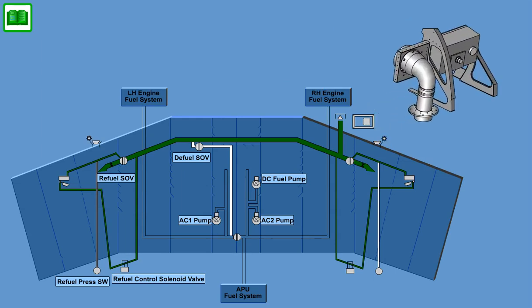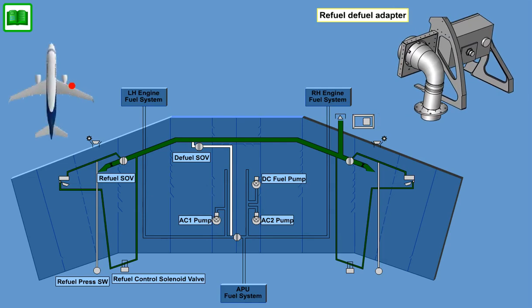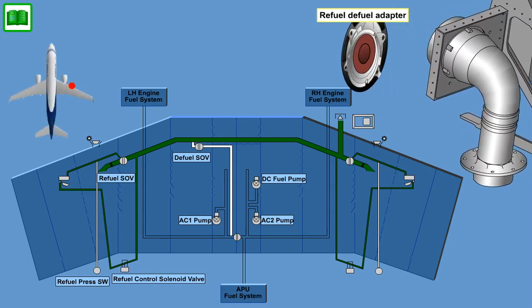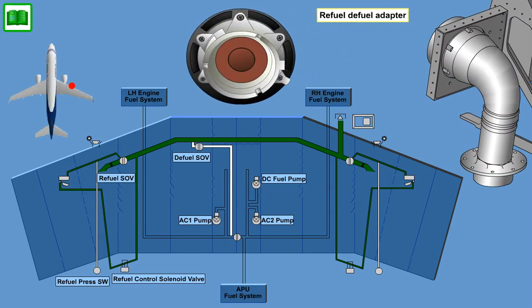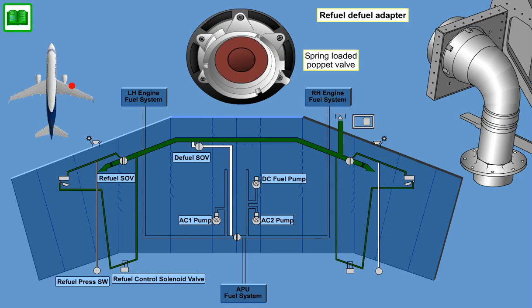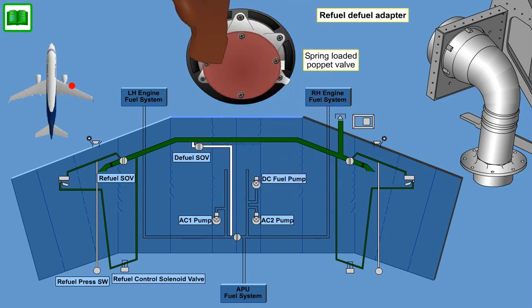The single-point pressure refuel adapter is installed on the right-hand wing leading edge. The adapter flange mates with standard refueling nozzles. A spring-loaded poppet valve is installed inside the adapter. The poppet valve opens when the refuel nozzle control lever is moved to the open position with the nozzle inserted into the adapter. Following refuel completion, the poppet valve is reseated by moving the nozzle control lever to the closed position, allowing the nozzle to be inserted and removed with minimal fuel spillage. The adapter incorporates a cap to prevent the escape of hazardous quantities of fuel if the poppet valve fails.